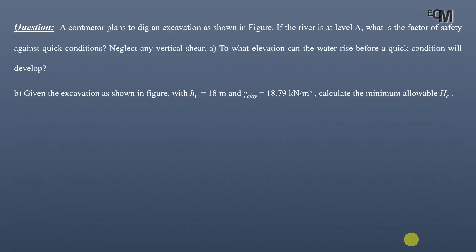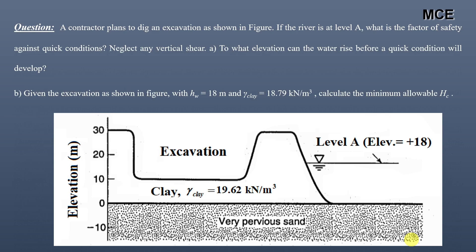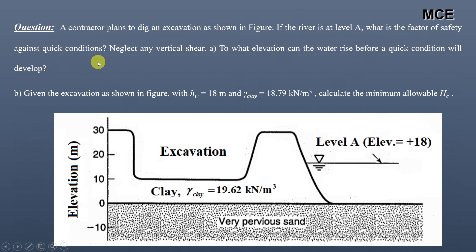Hello and welcome back to Master Soil Engineering. In this video you will learn how to find the factor of safety against a quicksand condition in a soil deposit. I have been given a problem which states that a contractor plans to dig an excavation as shown in the figure. If the river is at level A, we have to find the factor of safety against quick conditions.